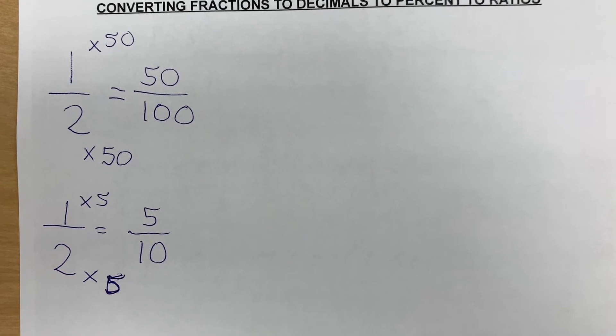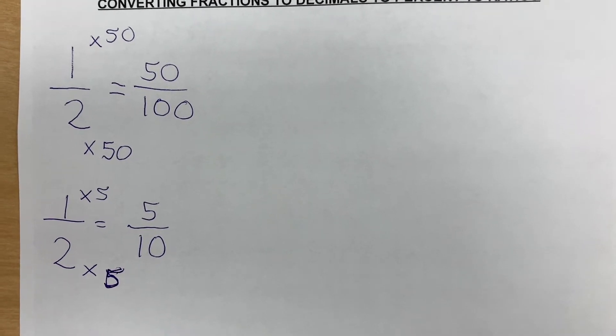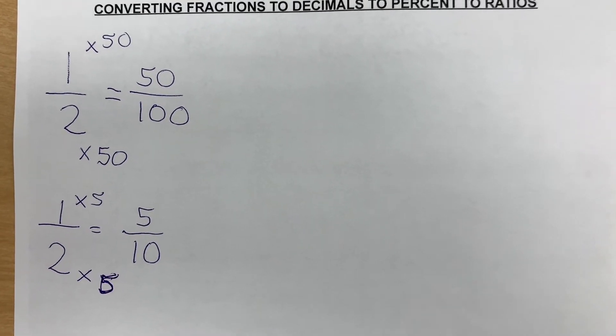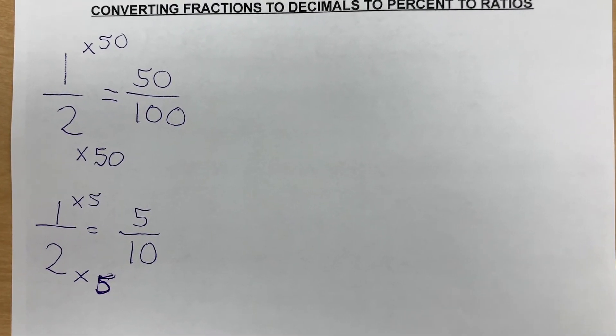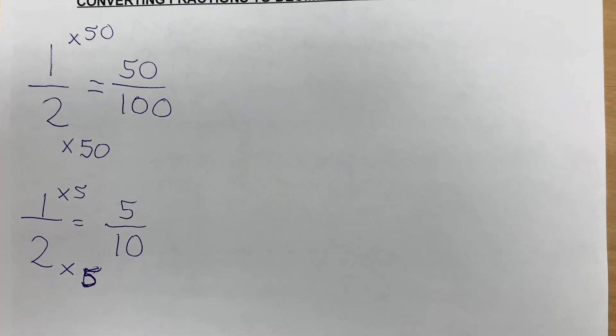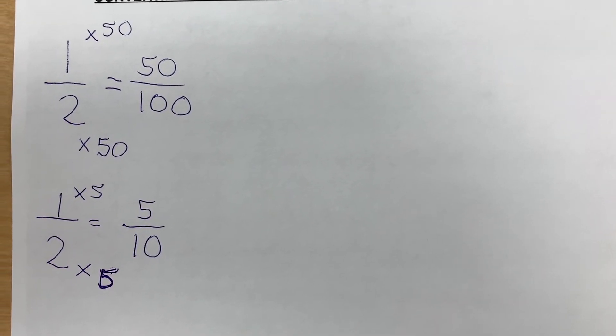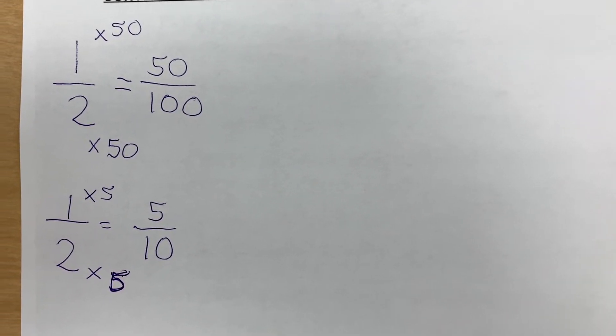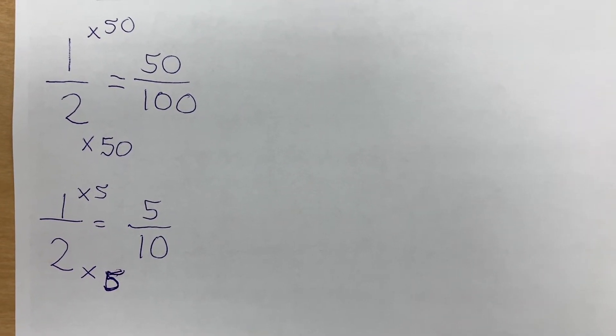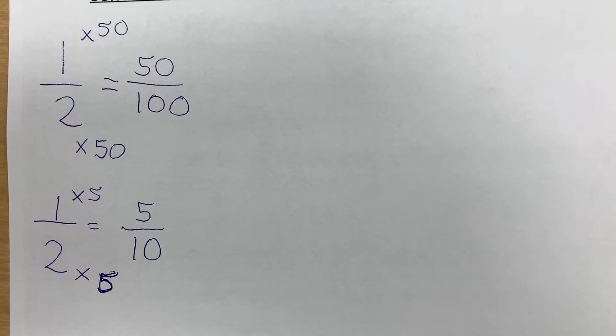So look at the top. The denominator has to be a base 10 number, so it has to be 10, 100, or 1000.